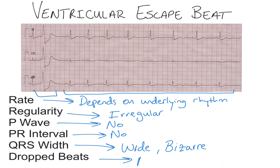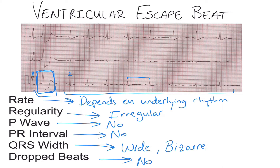There are no dropped beats. What is the difference between a ventricular escape beat and a PVC? It has to do with the pause between each normal QRS of the underlying rhythm. We know that we have roughly four and a half to five boxes for our R-to-R interval. With a compensatory pause, we would expect to see the QRS picked back up right where it left off after the wide ventricular beat.